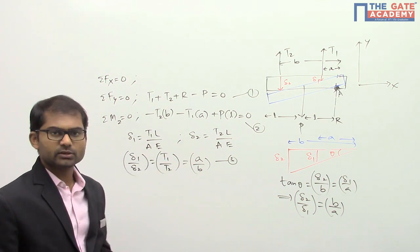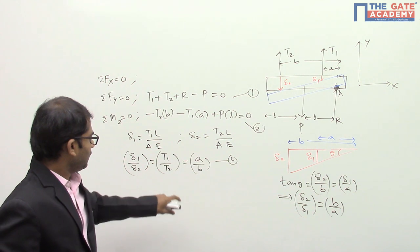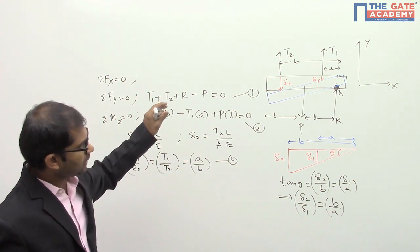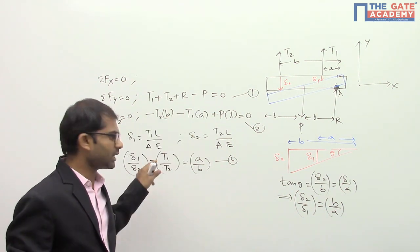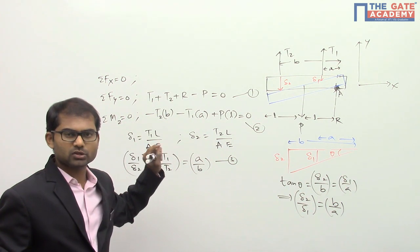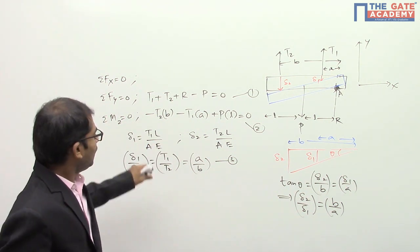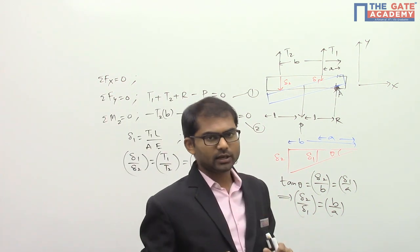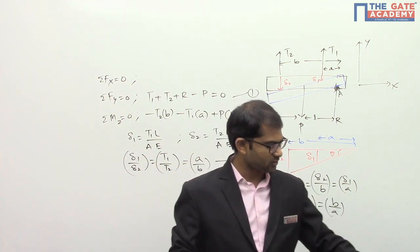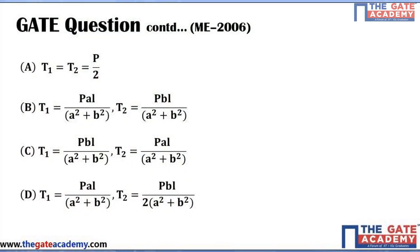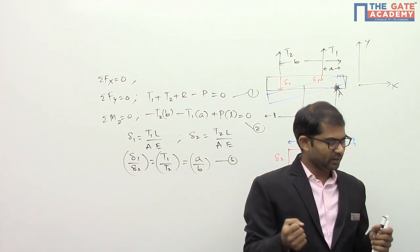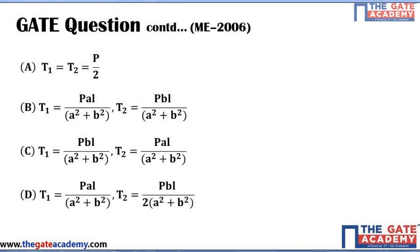Now we have three equations: the two static equilibrium equations and the compatibility equation (equation 3). Using these three equations we can evaluate all three unknowns. Solving them gives option B as the correct answer.